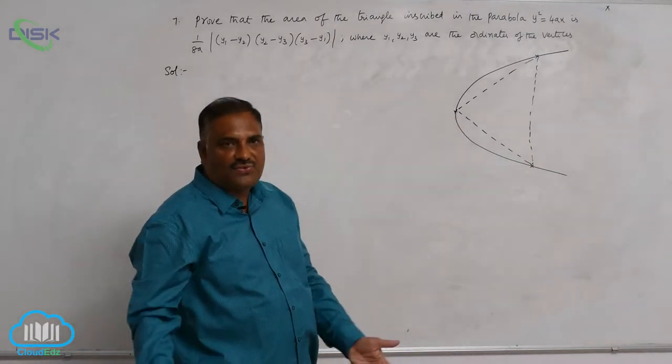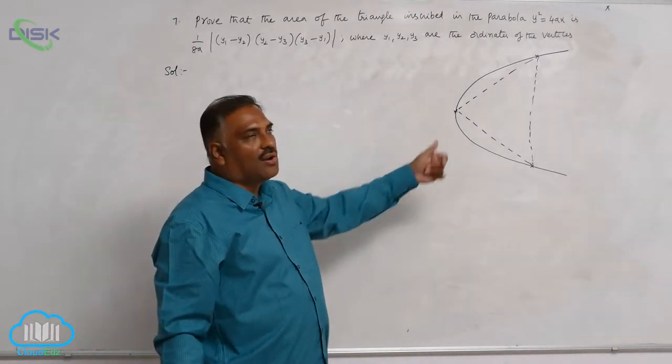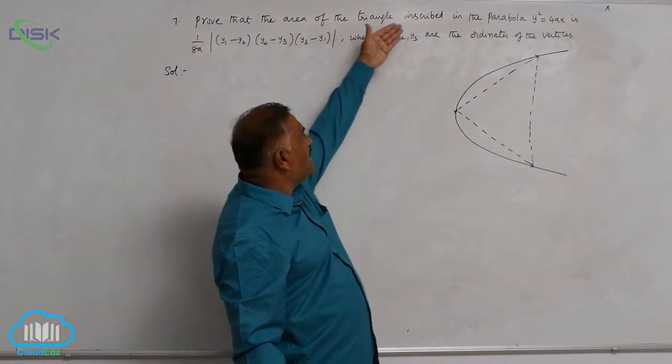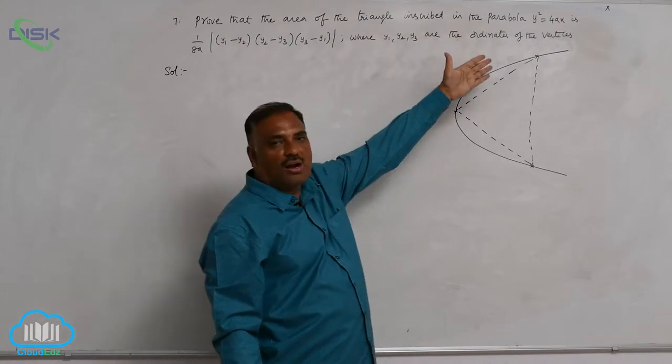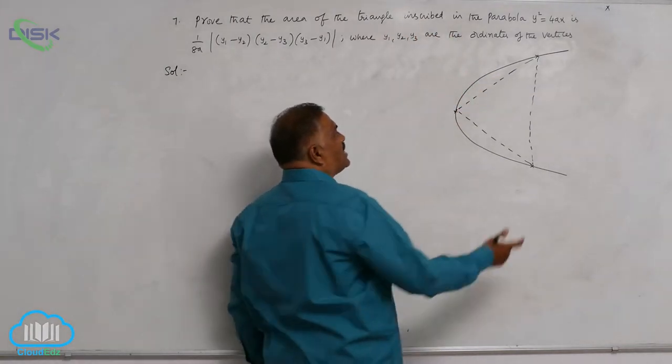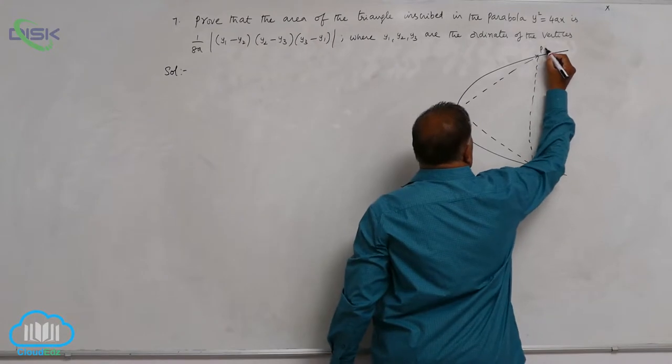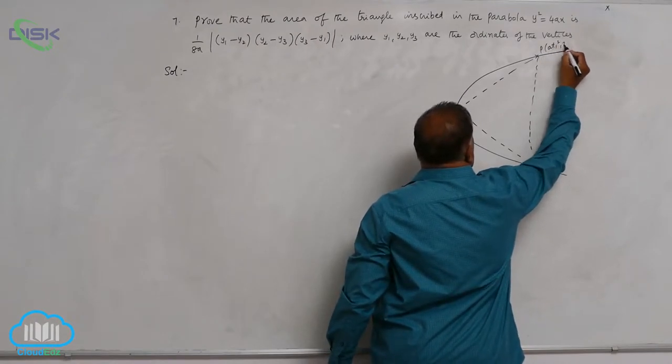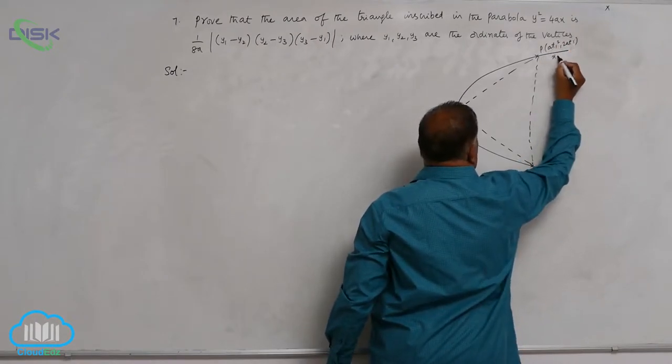Let us justify whether our figure is right or wrong. Prove that the area of the triangle inscribed in the parabola. So let us consider three points. P at₁² comma 2at₁ referring to x₁ comma y₁,